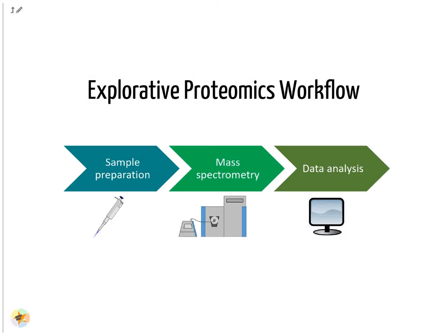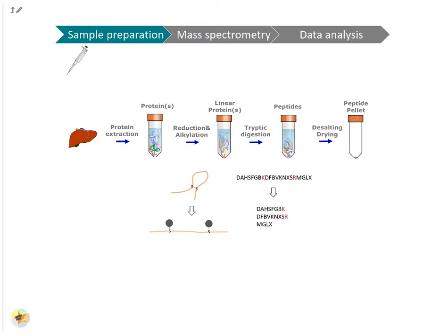Proteomics experiments consist of three main steps. First, the sample is prepared for analysis in the mass spectrometer. Then the sample is measured in the mass spectrometer. Last, the obtained data is analyzed. Typical sample preparation steps include protein extraction, reduction and alkylation, tryptic digestion and desalting. Before tryptic digestion, disulfide bridges are reduced and cysteines alkylated. This ensures that tryptic peptides are separated from each other and allows their mass-based identification. Trypsin cleaves amino acid sequences C-terminal of arginine and lysine. Desalting is a clean-up step to protect the instrument from contamination and clogging.